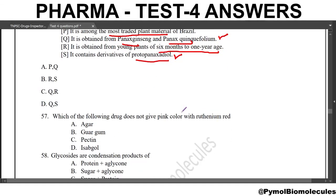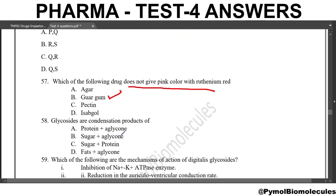Next question: which of the following drugs does not give pink color with ruthenium red? The answer is Barium. Next question: glycosides are condensation products of? The answer is sugar and the aglycone part. That is, the glycone part (sugar) and the aglycone — these two together constitute the glycoside.